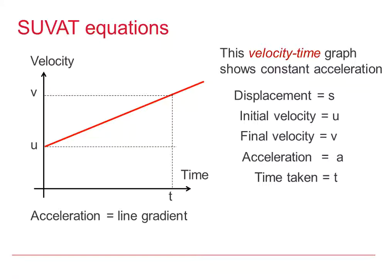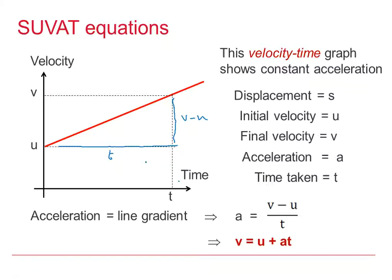If we look at this graph, the first thing I'd like to do is consider the gradient, and we know the gradient is the acceleration. To find the gradient of this line, we need to know V minus U on the vertical axis, and T on the horizontal axis. We know the gradient is A, so the acceleration equals (V minus U) over T, and with a little rearranging we get our first SUVAT Equation: V equals U plus AT.